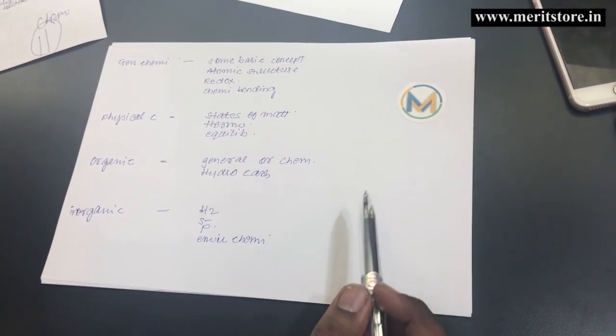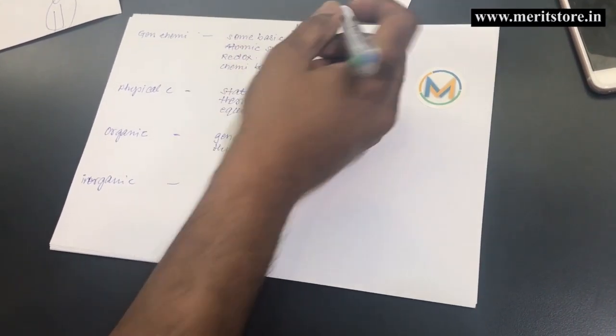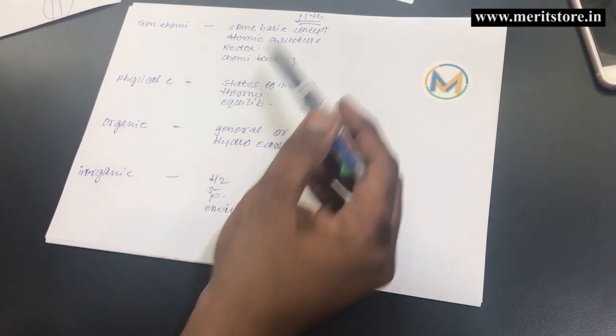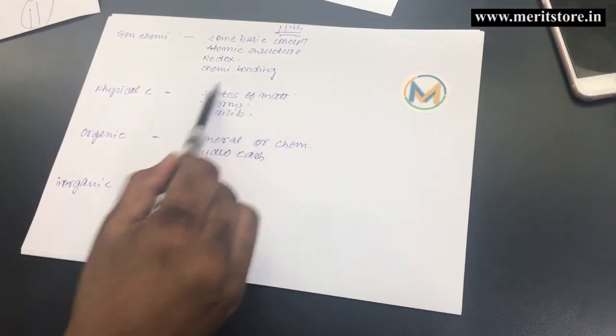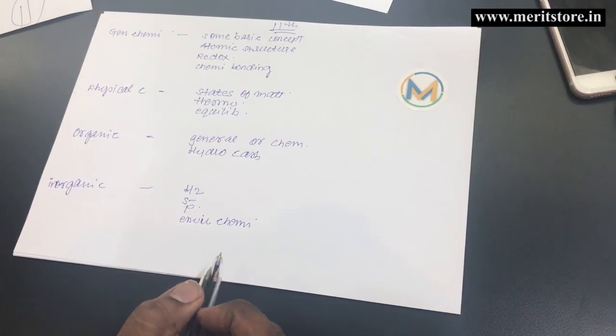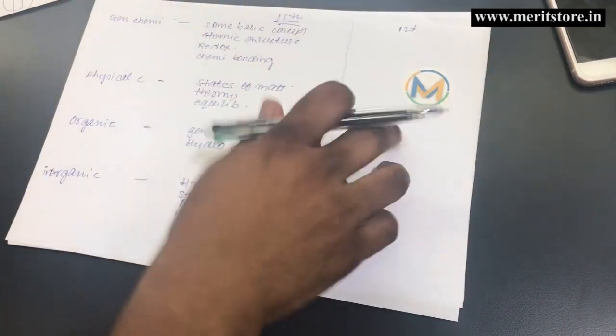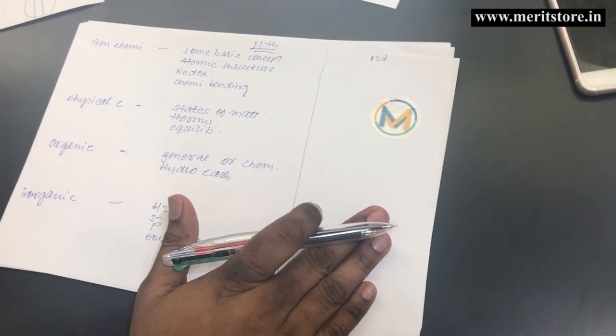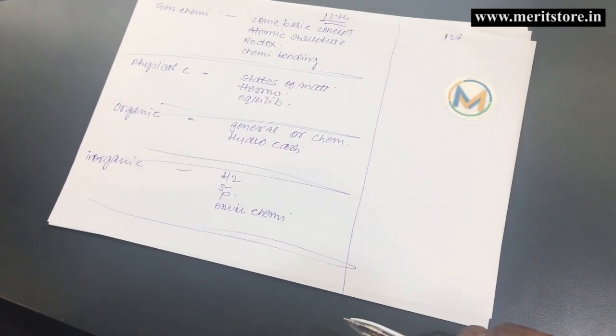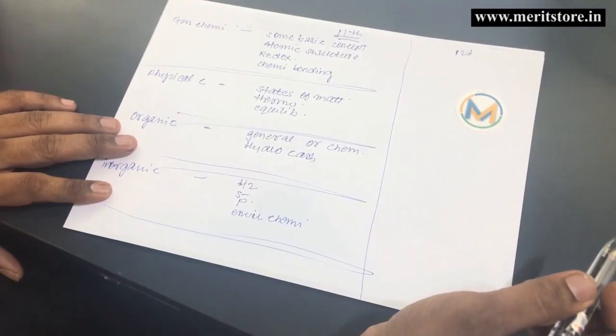If you look at this paper where I'm writing, you'll understand the overall breakup. I have broken down the 11th standard topics into general chemistry, physical chemistry, organic chemistry, and inorganic chemistry. In 11th standard, you have chapters from each topic. Now as an assignment, I want you to break down the entire 12th standard in the same way. When you do this, you'll know what you're studying from which topic. If you have a doubt, you can write in the comment section and I will help you sort this better.